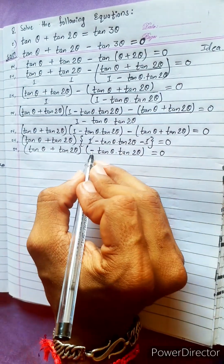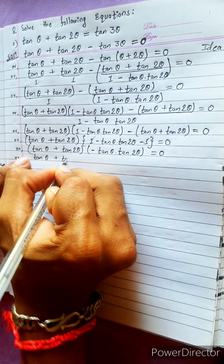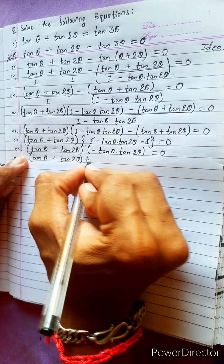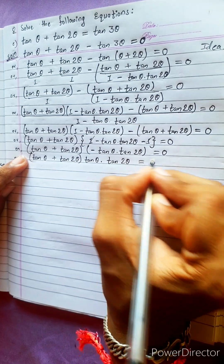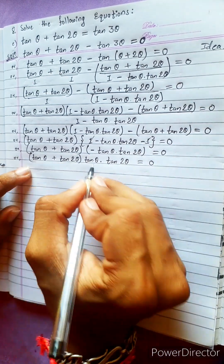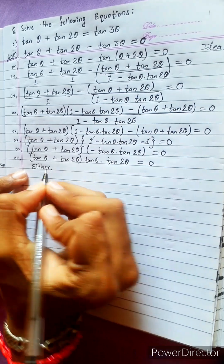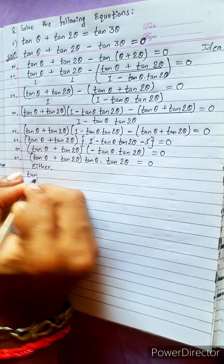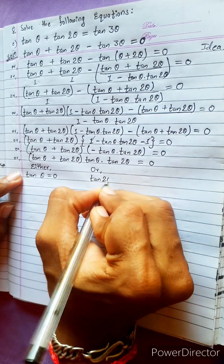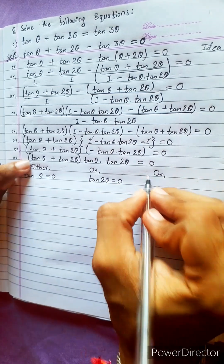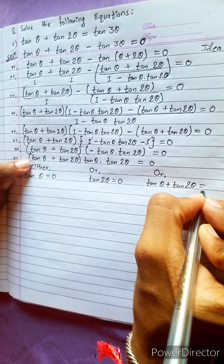We're left with (tan θ + tan 2θ) · (- tan θ · tan 2θ) = 0. We can move the minus to the other side, giving us: tan θ · (tan 2θ) · (tan θ + tan 2θ) = 0. Now we have three terms equal to 0, so apply either/or: either tan θ = 0, or tan 2θ = 0, or tan θ + tan 2θ = 0.